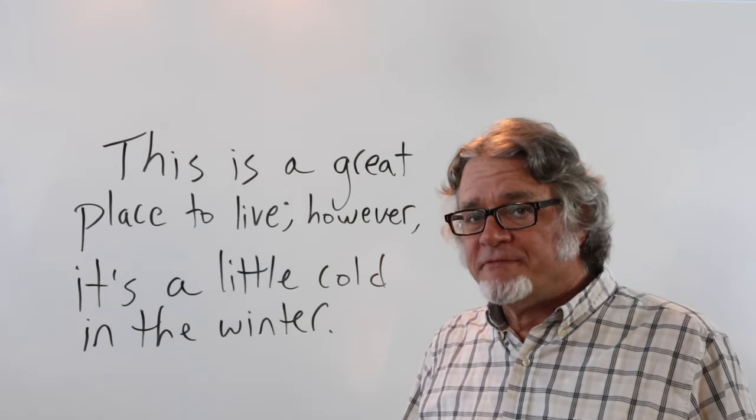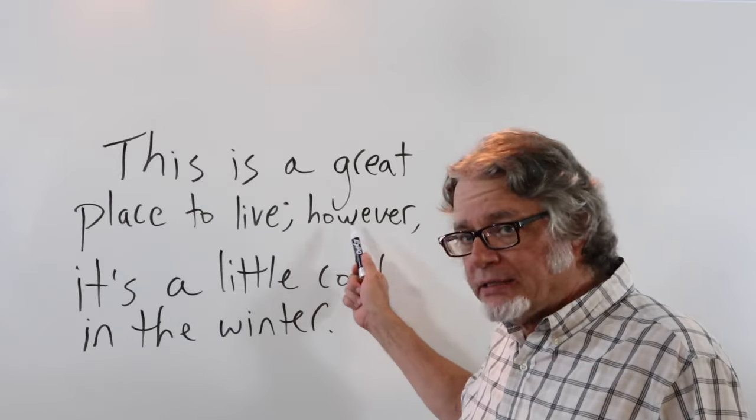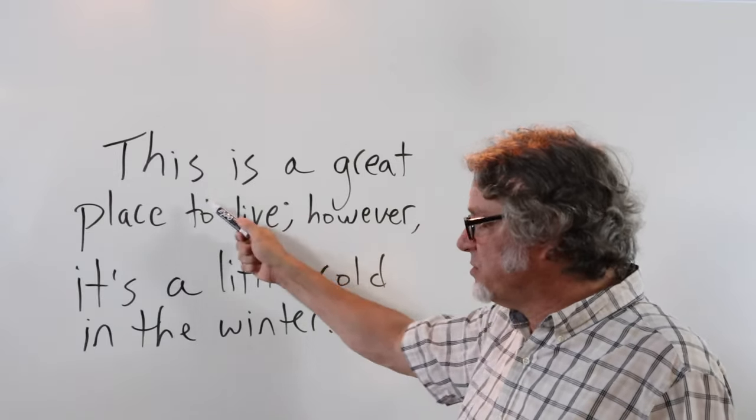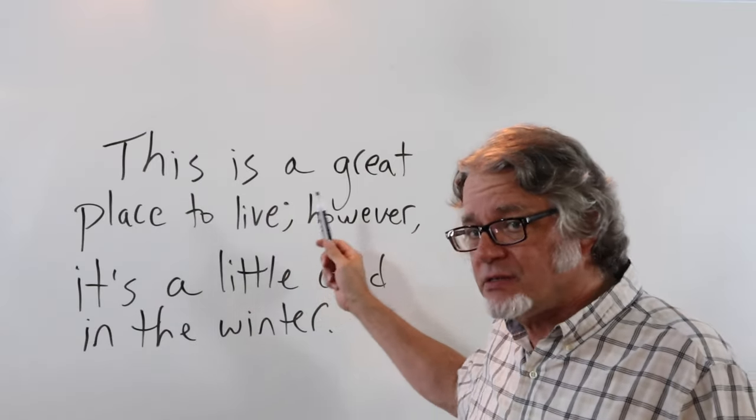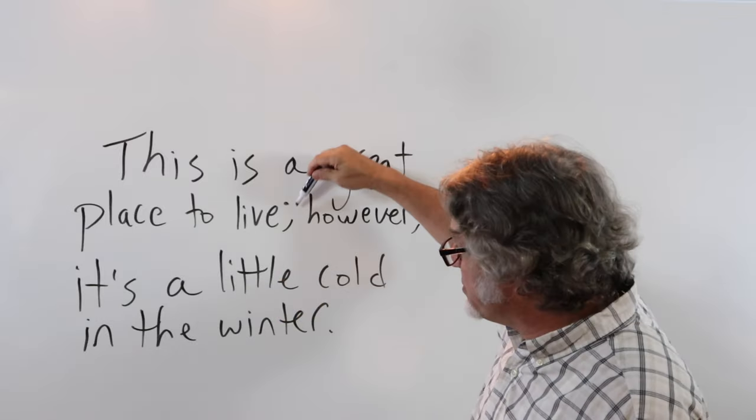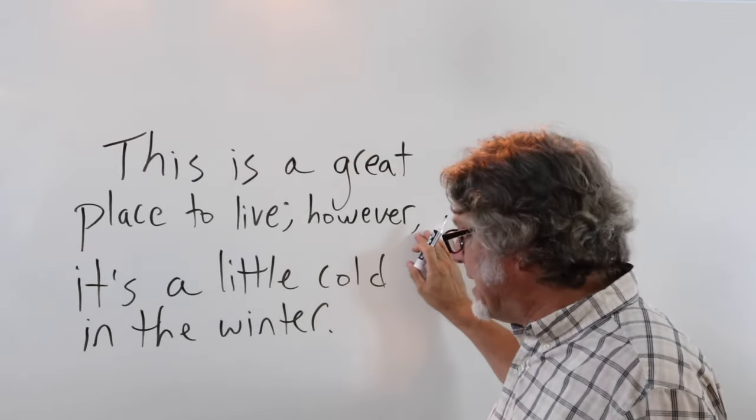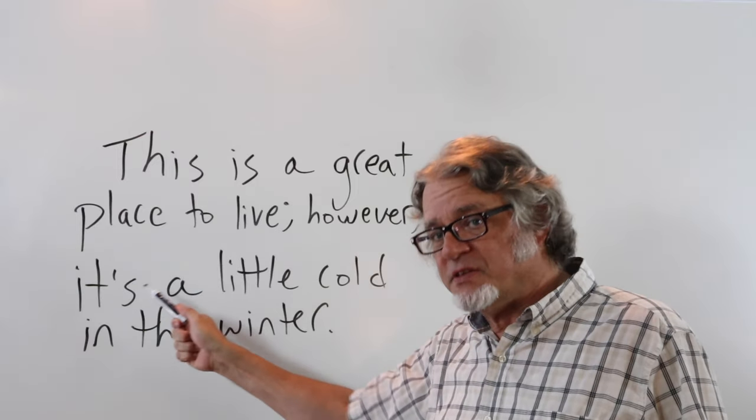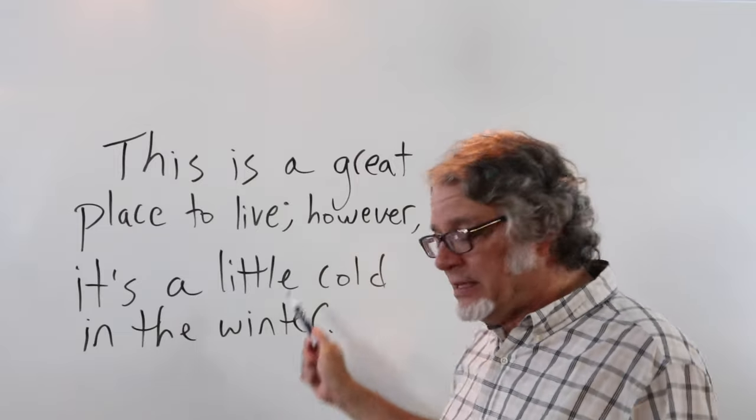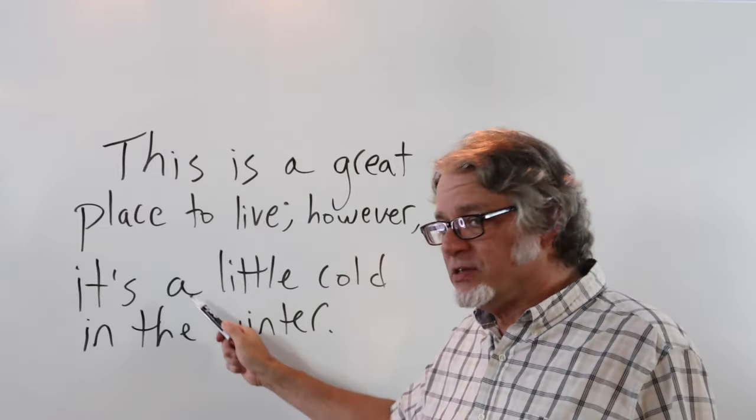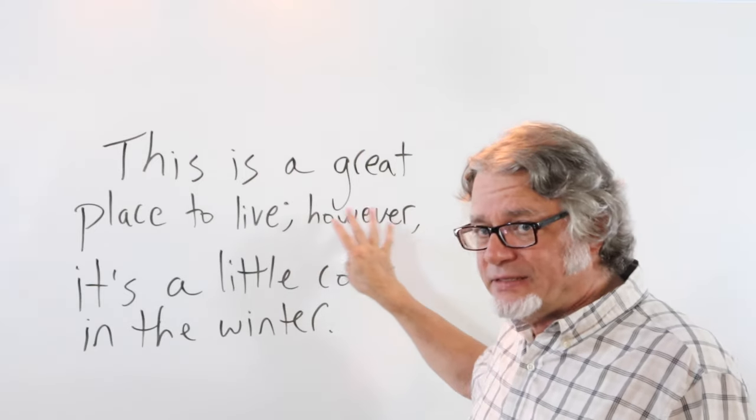Keep in mind that however is also a conjunctive adverb. It's similar to the word but. So it goes in the middle of two independent clauses and shows a contrast. This is a great place to live - here's a semicolon, here's the word however, and then there's a comma, and then the second part of the sentence: it's a little cold in the winter. This just indicates there's a difference between this and this. In this case this does not mean any method. It has a different use.